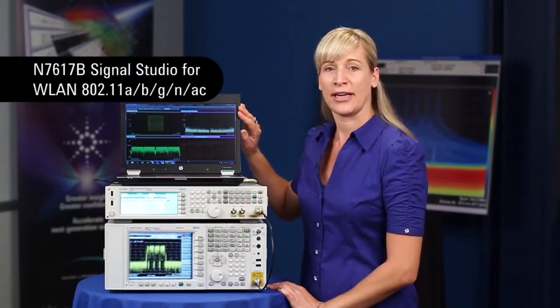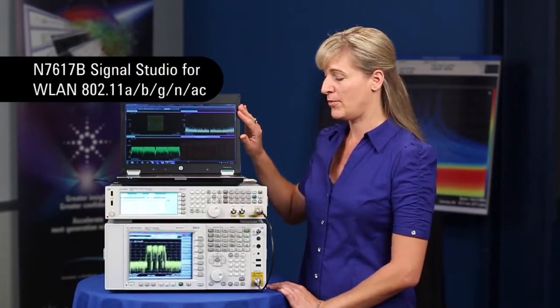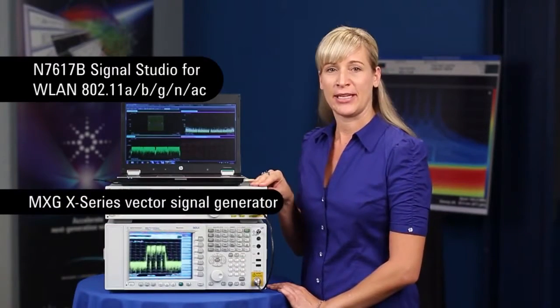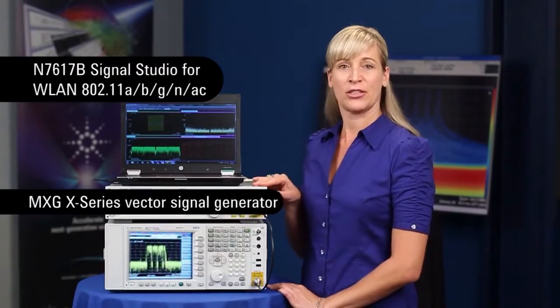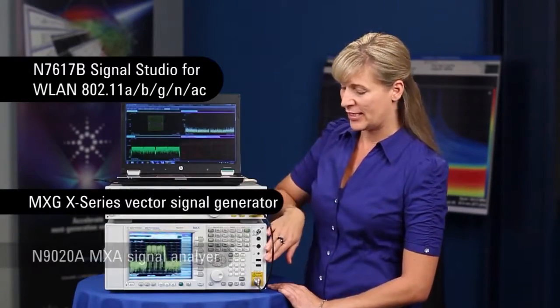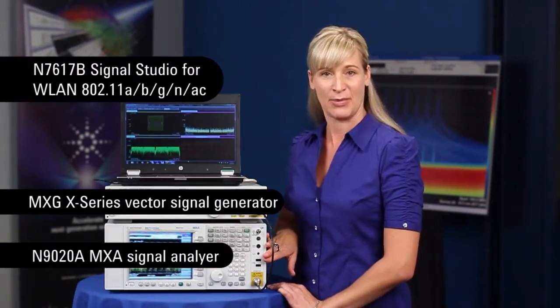To perform this measurement I've used the Signal Studio Wireless LAN software to create the 802.11ac 160 megahertz waveform and I've stored this waveform in the MXG vector signal generator. The MXG is now generating the RF signal that's feeding in to the MXA which also has the 160 megahertz analysis bandwidth option.